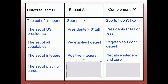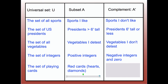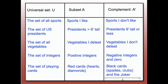Finally, if the set of playing cards is the universal set U, and the subset A is the set of red cards — hearts and diamonds — then the complement of A, A-prime, is the set of black cards: spades, clubs, and the joker or jokers. Adding the joker in the complement is kind of the same thing as making sure that zero is included in the complement of positive integers. And that concludes this video.